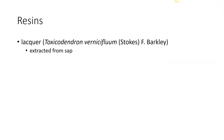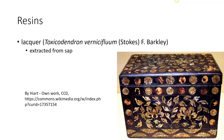We have lacquer, which comes from the plant Toxicodendron vernicifluum. This is a relative of poison ivy. Lacquer itself tends to give allergic reactions because of proteins inside it, so they have to extract it carefully. But when you do get the lacquer out it is an absolutely marvelous material to use to seal wood and other things. You can see the gloss on this box that was coated with lacquer — it gives a very deep shine.